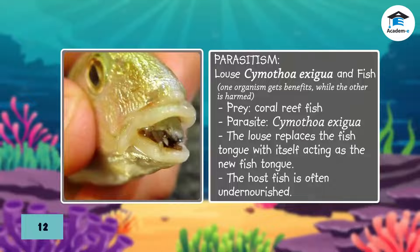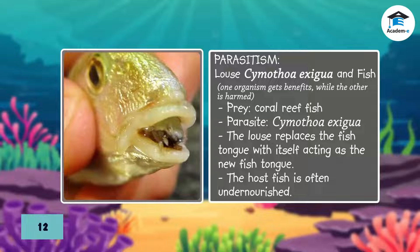An example of a parasitic relationship is between the louse Simothoa exigua and fish, including those in the coral reefs. This marine louse enters through the fish gills, attacks the fish tongue, and attaches itself as the fish's new tongue. Scientists are still studying if the parasite causes disease, but they have observed its host fish to be undernourished.